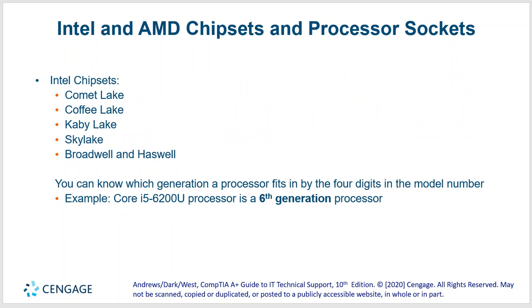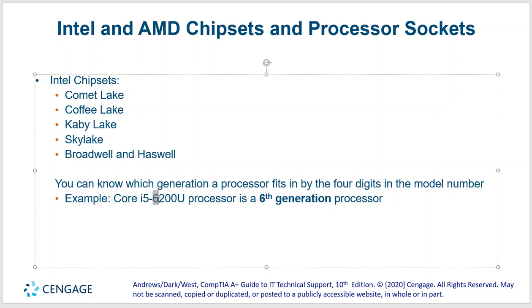Let's talk about Intel chipsets. Your latest Intel chipset is Comet Lake. Before that it was Coffee Lake, then Kaby Lake, then Sky Lake. These relate to your different generations. You can tell which generation by a number in the CPU name — right there.